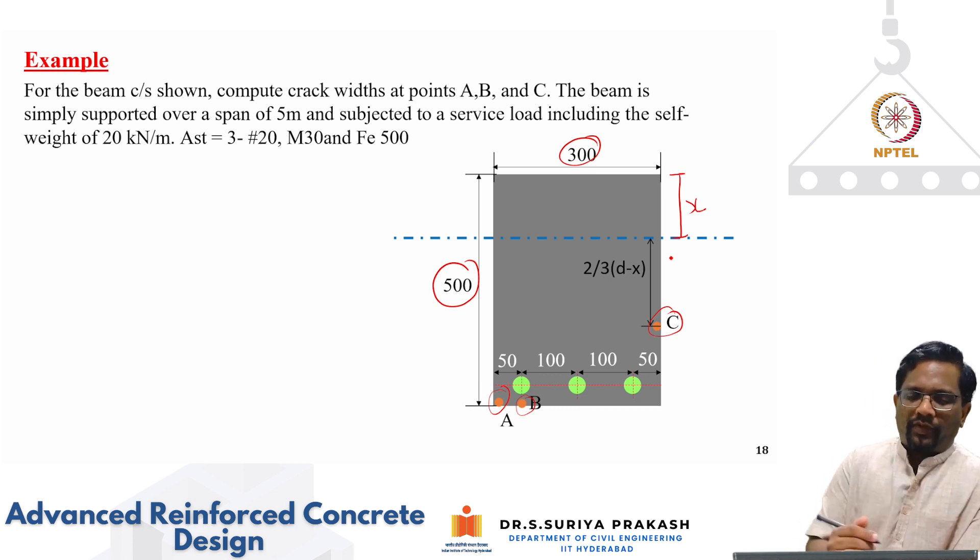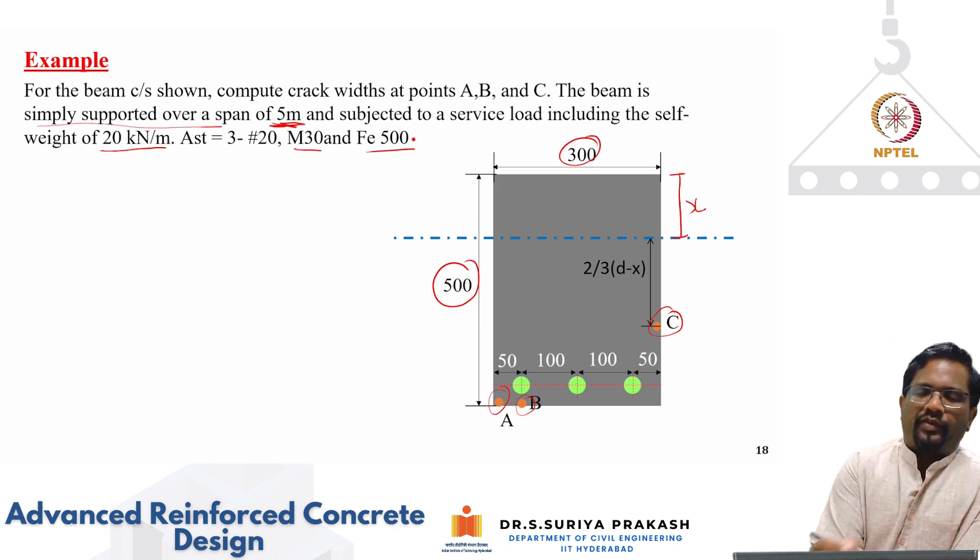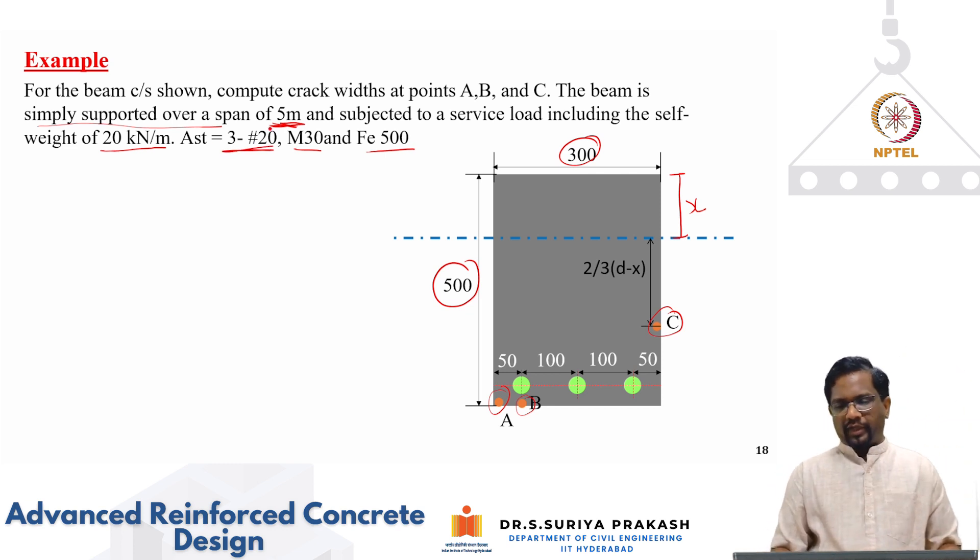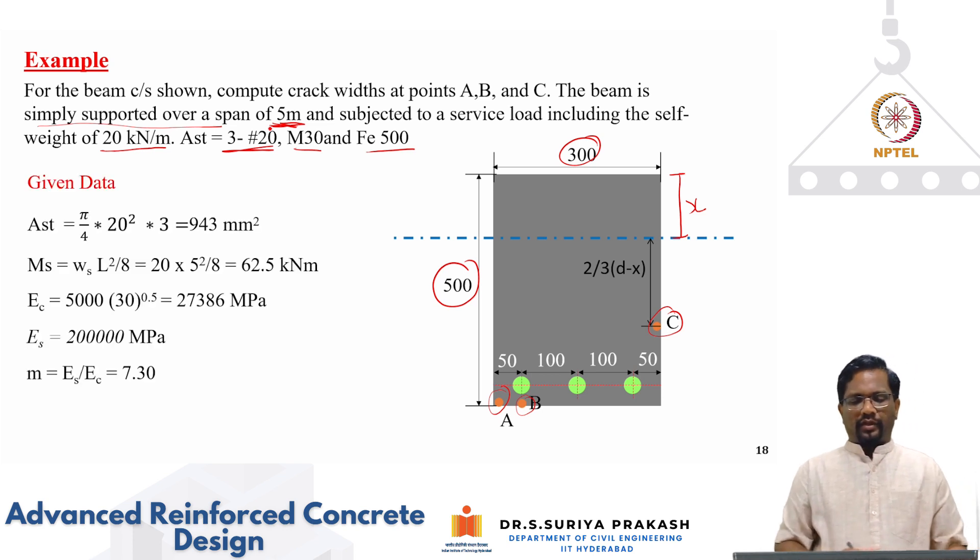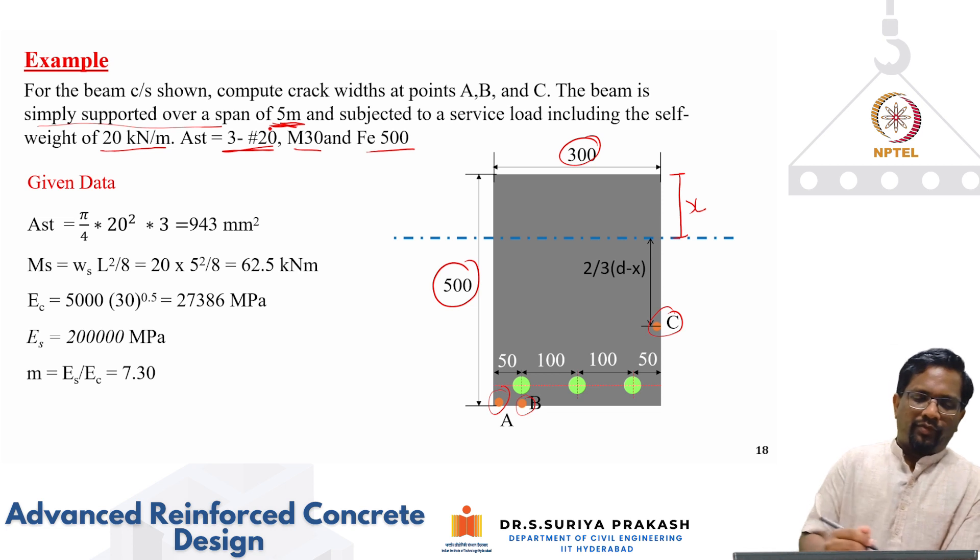Whatever load that we are looking at, it is having subjected to a load of 20 kNm and it has a span of 5 meters. And we are taking a simply supported span. And we are going to use M30 and Fe 500 grade. And we are saying that the bottom steel is 3 numbers of 20 mm bar. ESG is already given to you pi by 4 D square multiplied by 3. Total area of steel is 943 mm square.